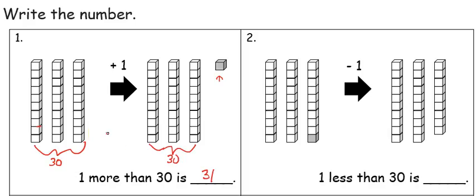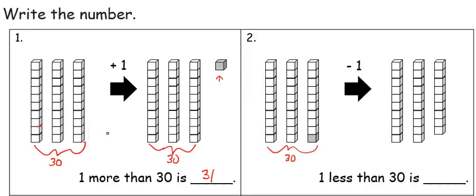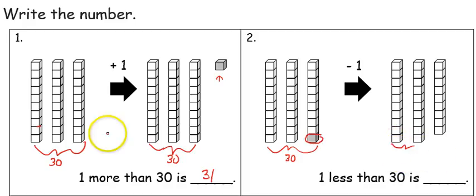The second question is asking what is one less than thirty. I start off with thirty again, but I'm going to show in my second picture that I'm going to take one of the cubes away. That is showing me one less than thirty. So if I look at that picture, I now have two groups of ten, which is twenty, and then nine cubes, since I took one of those cubes away. That tells me that one less than thirty is twenty-nine.